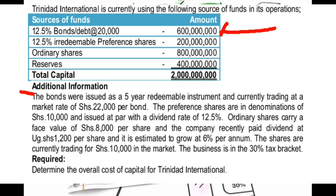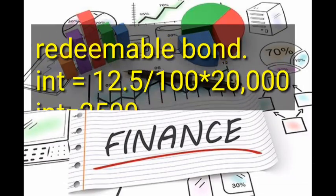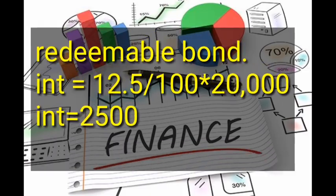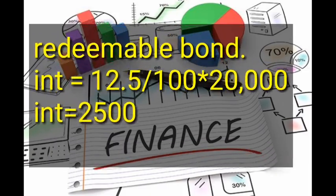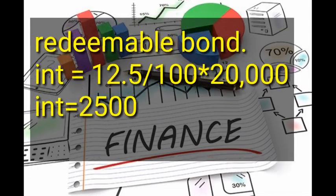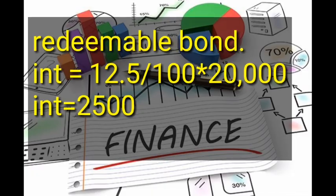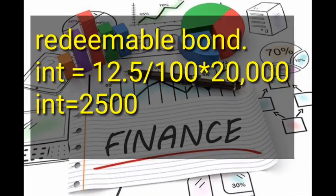To calculate the overall cost of capital, we first find the specific cost of capital for each source of finance, one by one. We start with the redeemable bond. The interest rate for the bond was 12.5 percent, so the real interest is 12.5 divided by 100 times the face value of 20,000 — giving us an interest of 2,500.